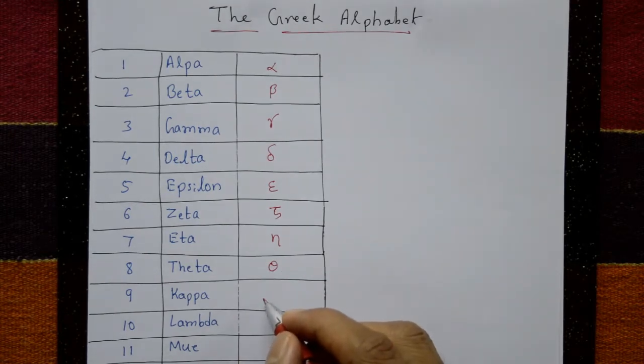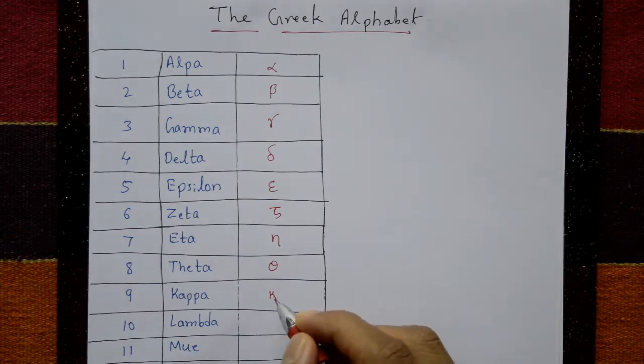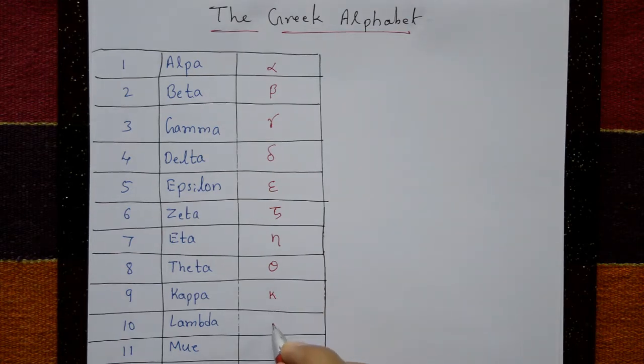And kappa — kappa is like K. Lambda — this is lambda.